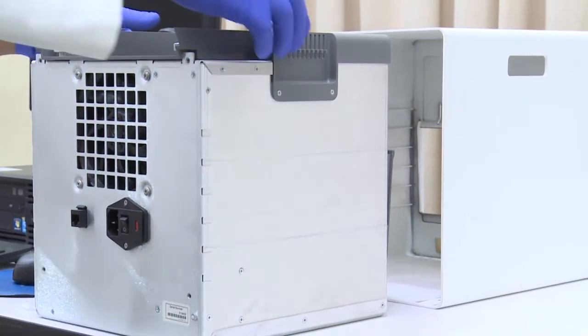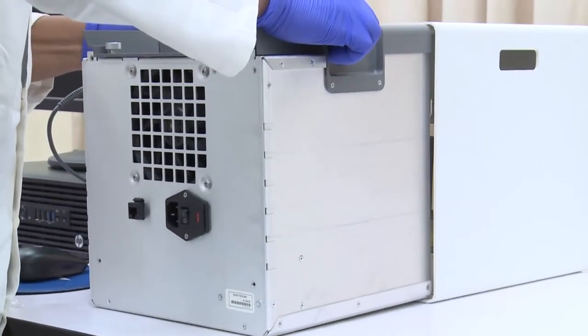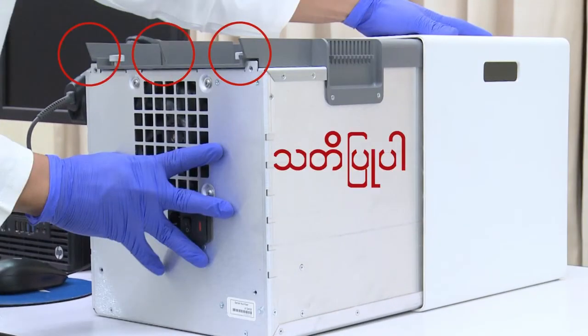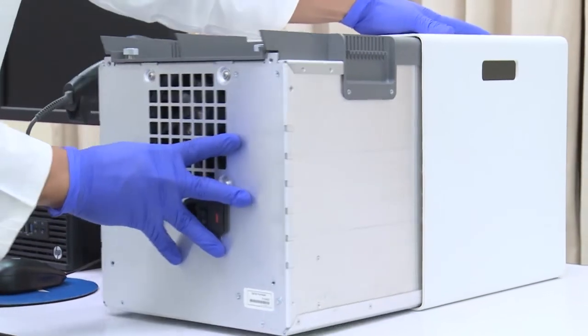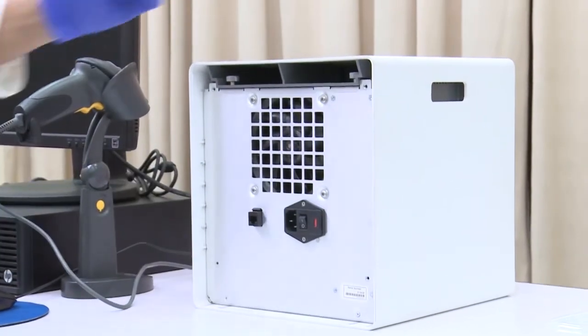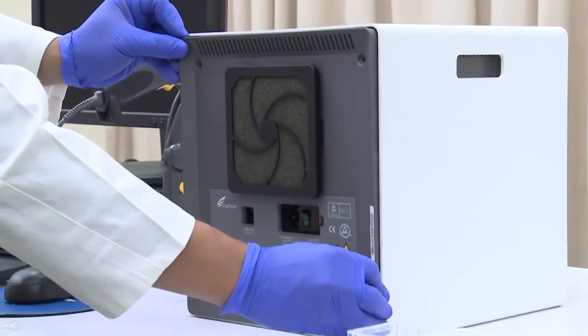After cleaning, insert the machine body into the outer cover by pushing from the back to the front as shown. Reassemble the fan filter and install the back cover.